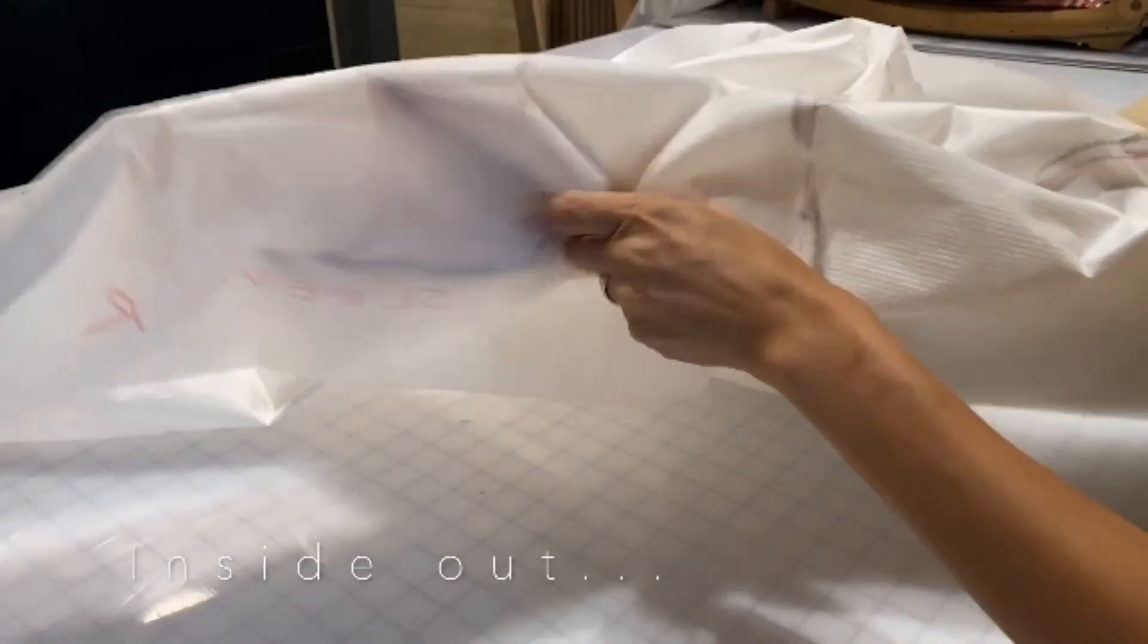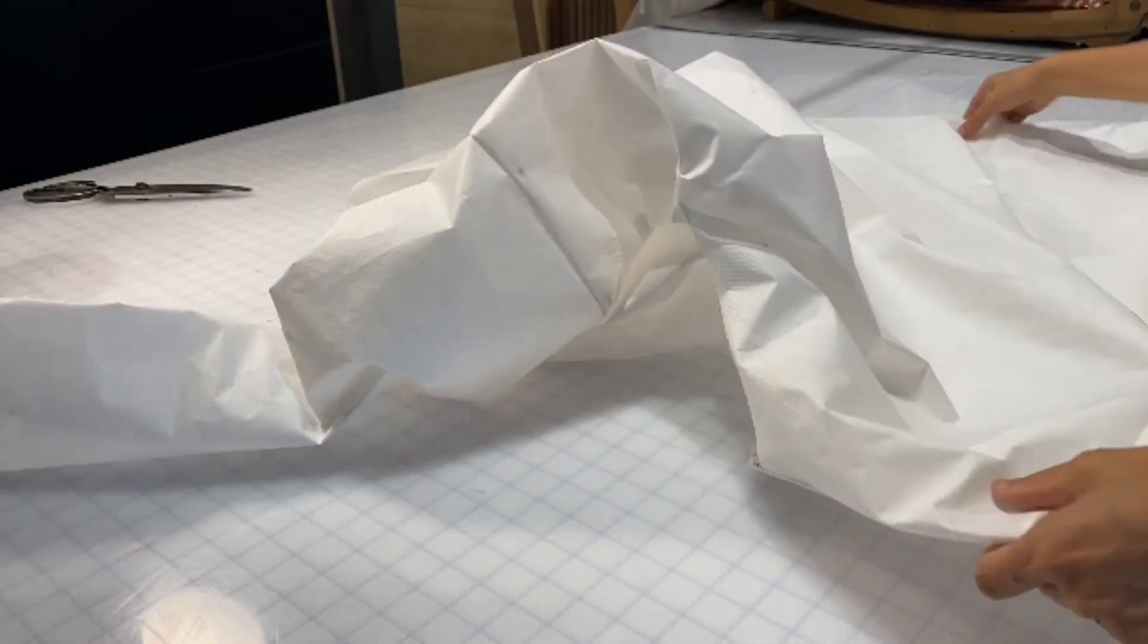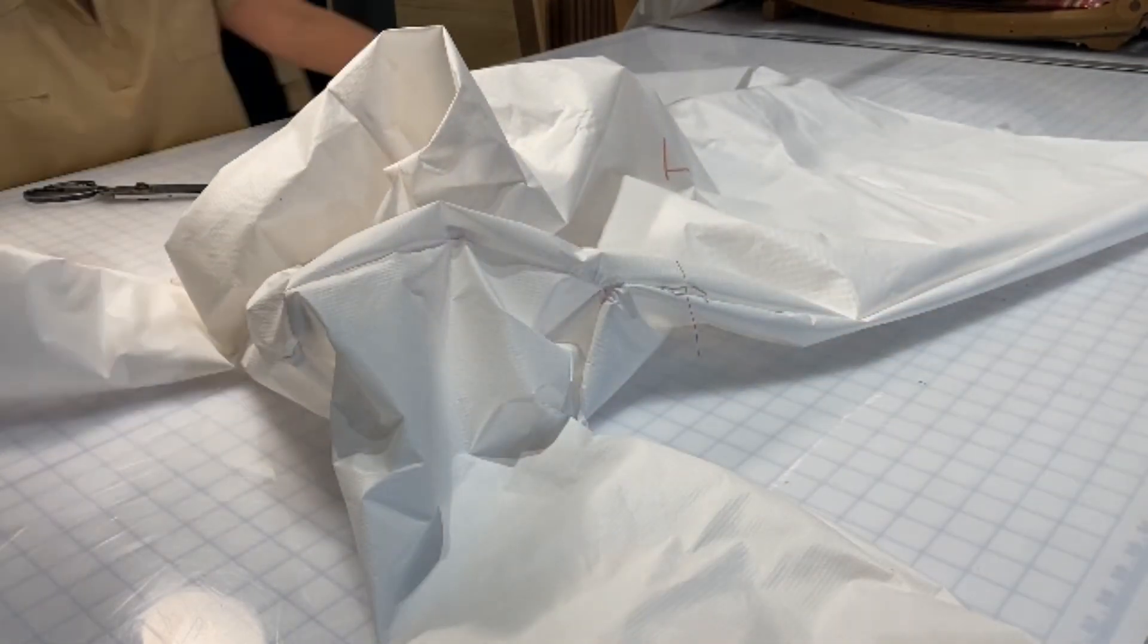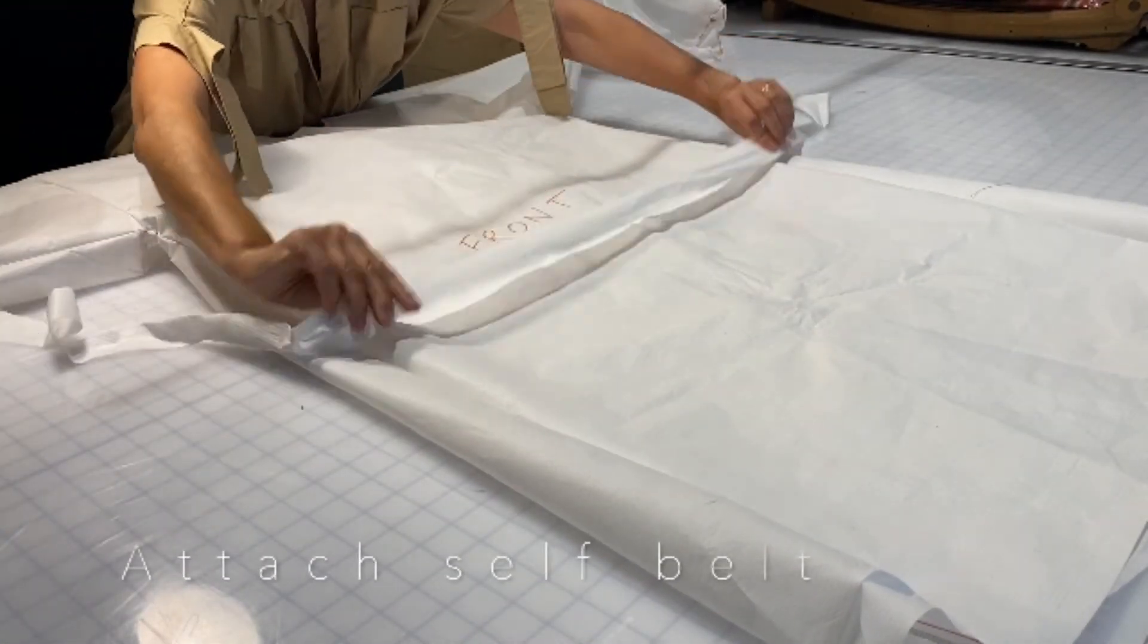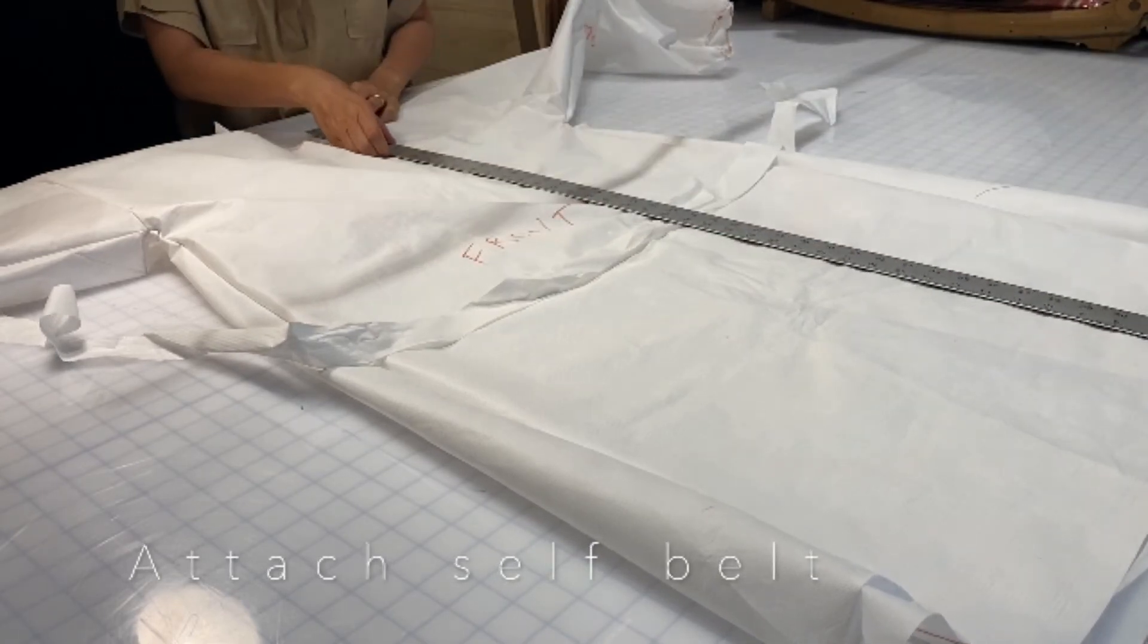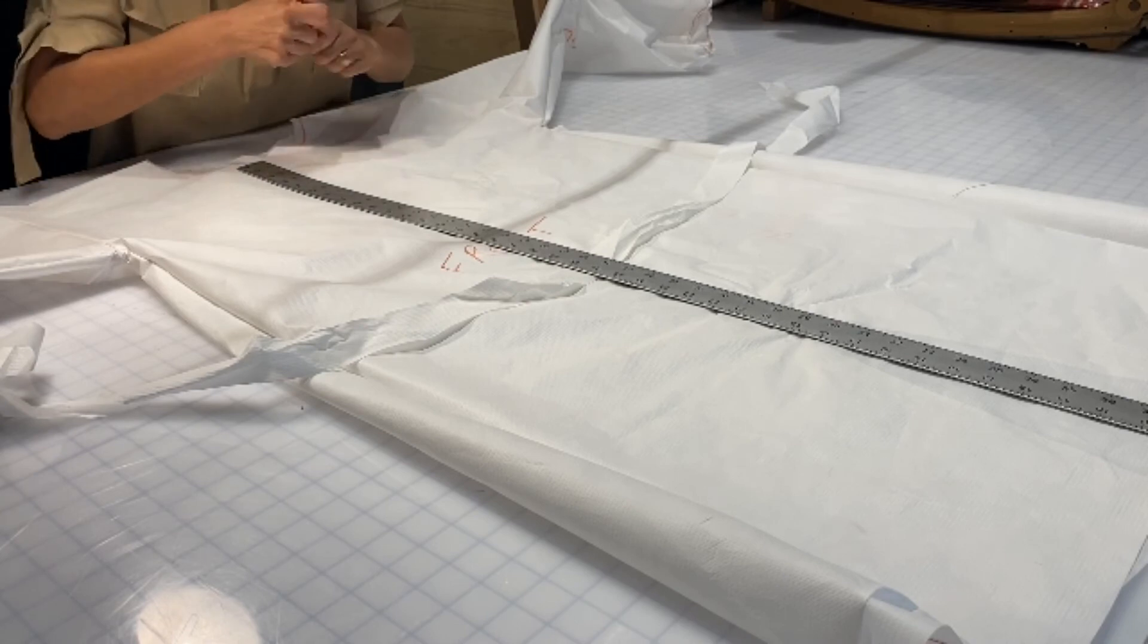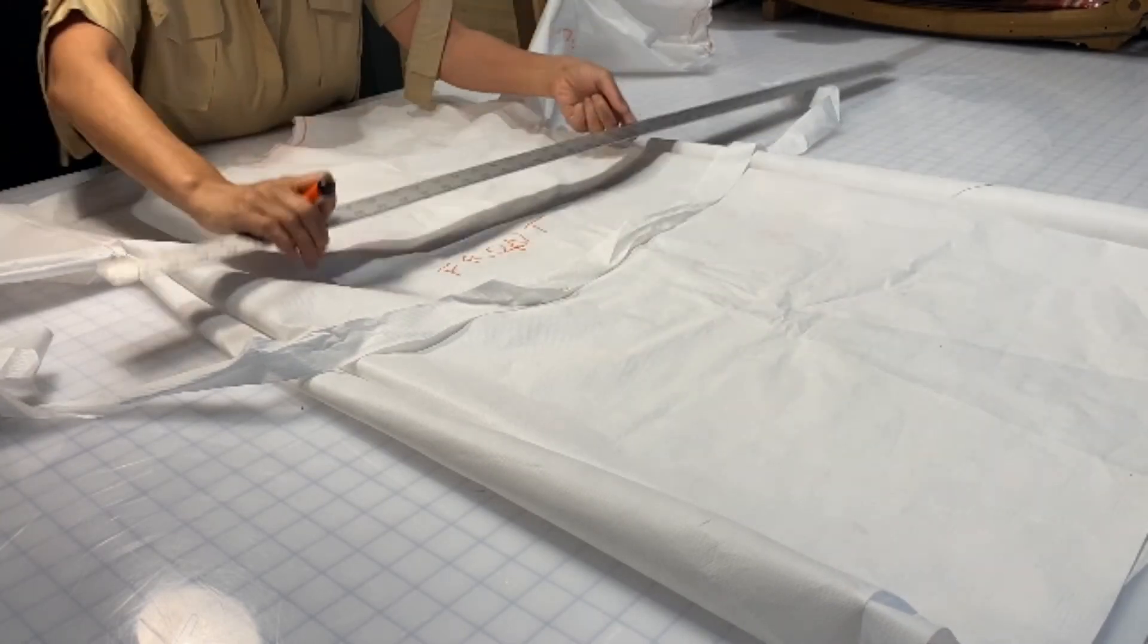Now that our gown is sewn, we're going to turn it inside out so that the right side of the fabric is showing. So you basically have a finished gown. We just have to add the self belt. So we're going to take our belt and we're going to mark it 17 inches from the neckline and 21 inches from the shoulder seam. Just going to mark it with a little marker or pencil so that you know where to place it.